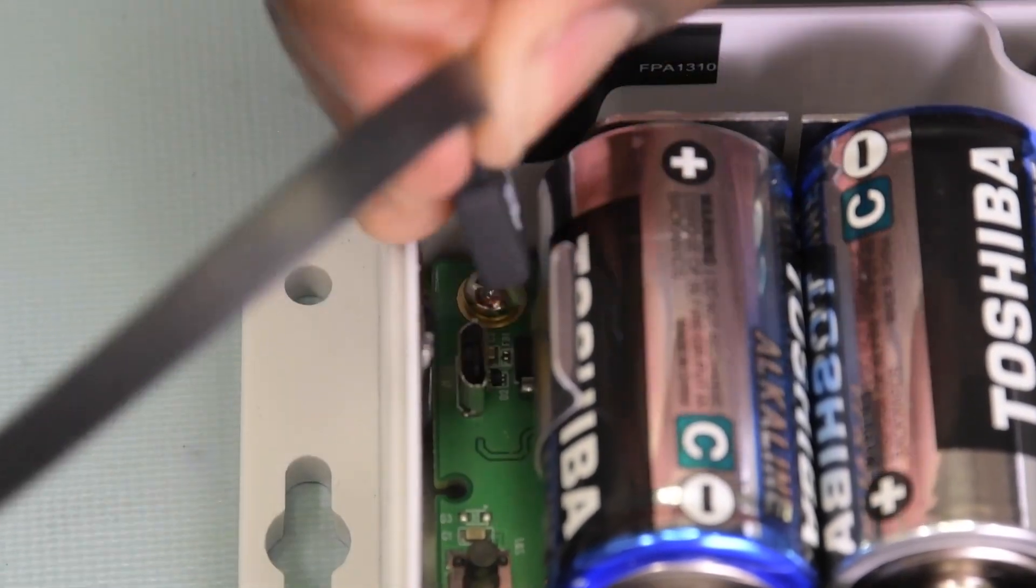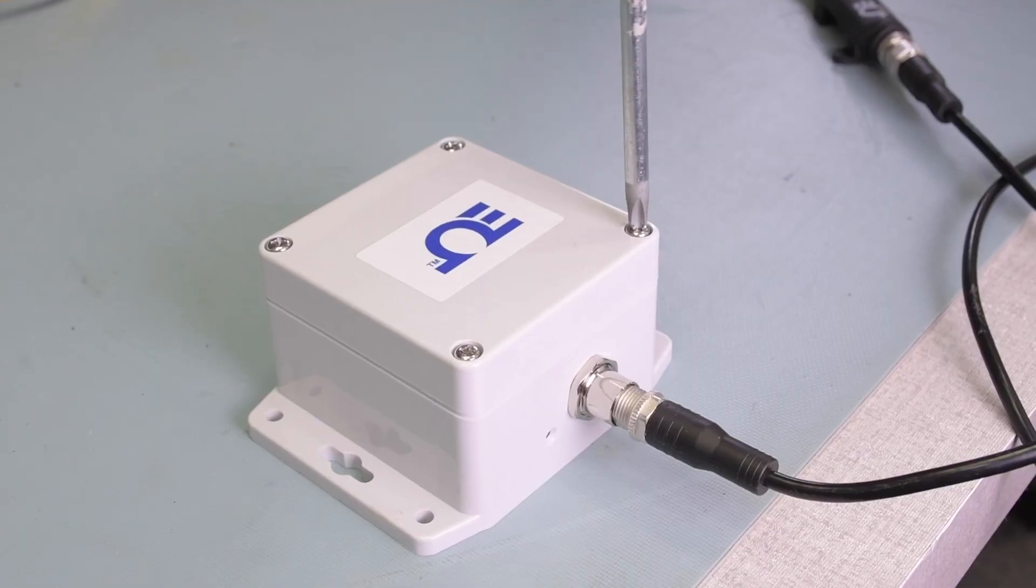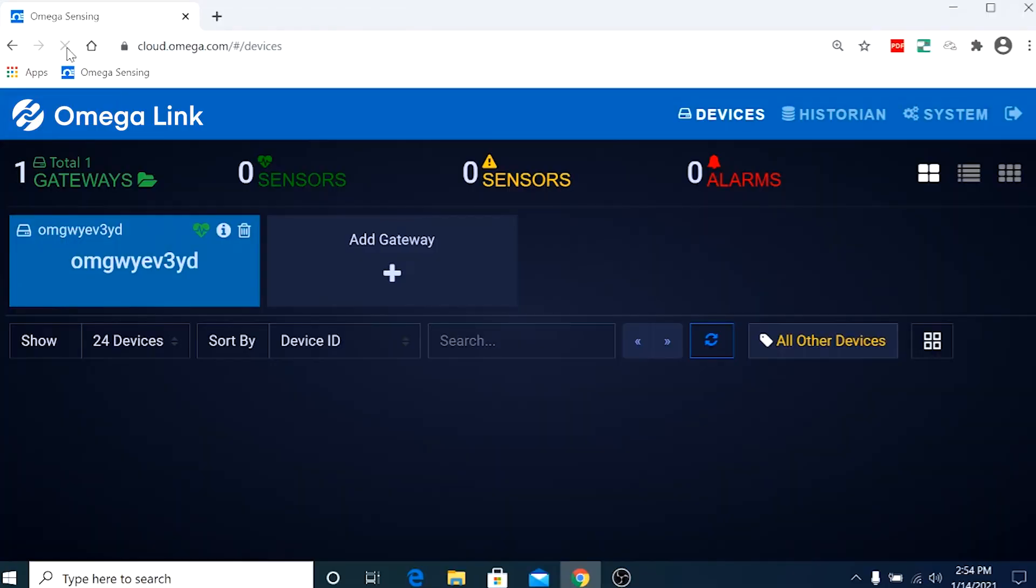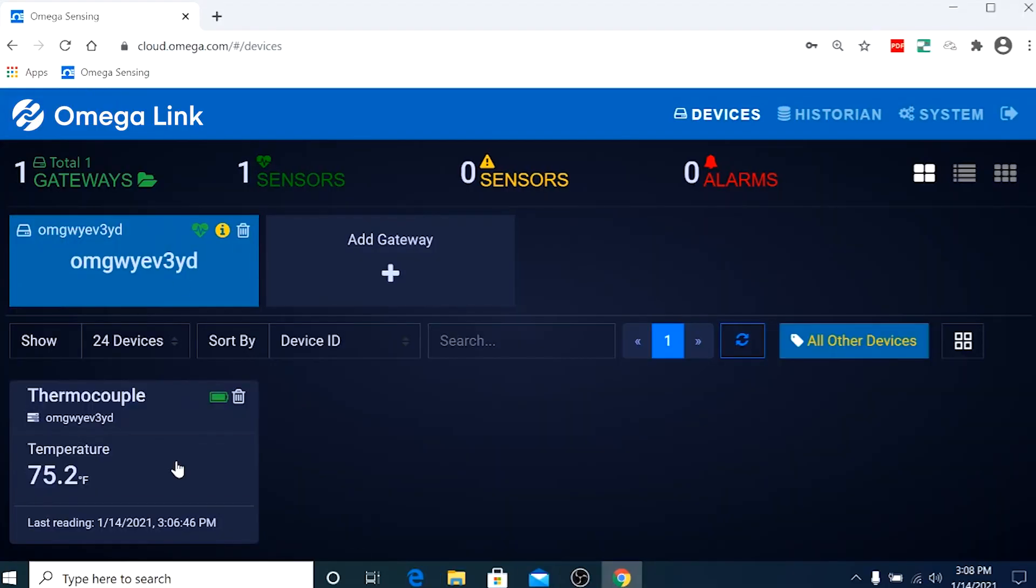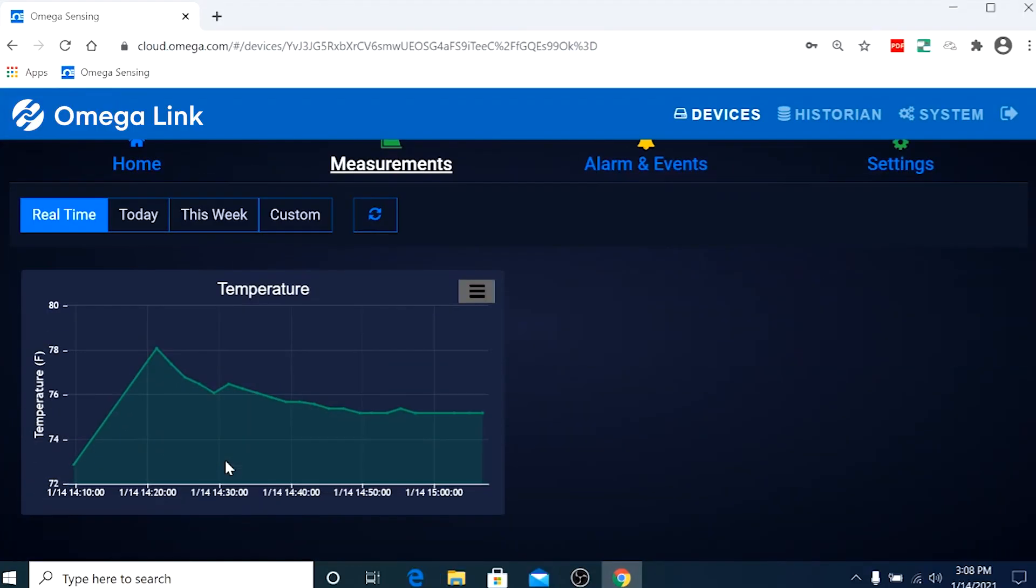Now we can remove the micro USB cable from the inside of the IF-006 and screw the top back into place. And if we refresh the cloud interface, we'll now see our SP-005 transmitting data. And there you have it.